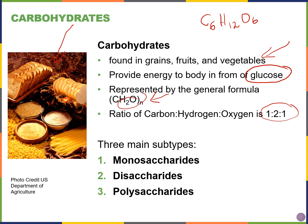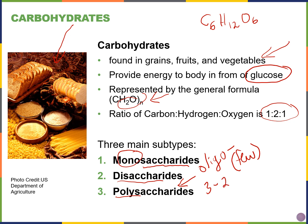There are three main subtypes of carbohydrates. 'Saccharide' means sugar. 'Mono' means one, so monosaccharides are a single sugar. Disaccharides involve two sugars linked together — like two glucose molecules. Polysaccharides mean many sugars linked together. You may also see oligosaccharides, where 'oligo' means few — typically ranging from three to about twenty monosaccharide monomers linked together.